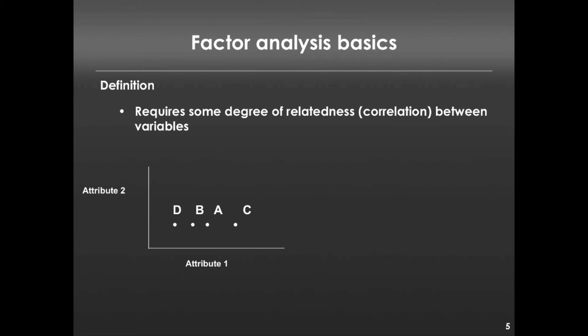For us to be able to perform factor analysis, there needs to be some sort of relatedness or correlation between the underlying variables. Imagine we have a set of data such that there are only two attributes, and there's four different responses, a, b, c, and d. If the responses are arranged in the way that they are in this graph in the bottom left, it's impossible to do a factor analysis. Because the level of attribute one does not depend on the level of attribute two, there's no relatedness. And so we'd say these four dimensions capture four unique traits that we're trying to measure.